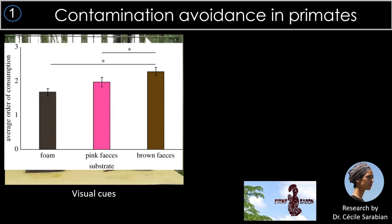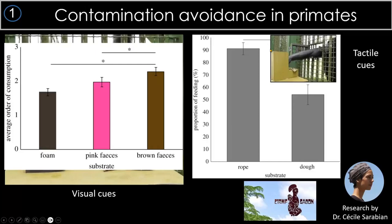In another experiment, food was placed inside a box with no visual cues. The banana rested on either a coiled rope or a coiled piece of Play-Doh — same shape, but Play-Doh has a texture somewhat similar to feces. If the banana was on a rope, chimps ate it about 90% of the time. If it was on Play-Doh, they ate it only about half the time, suggesting texture alone hints at risk.